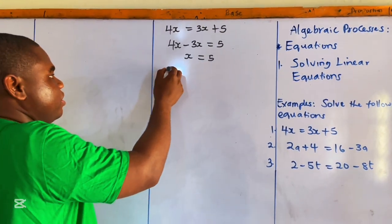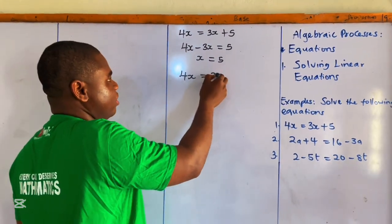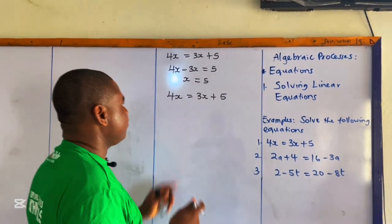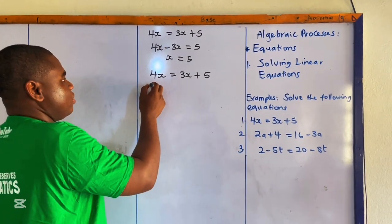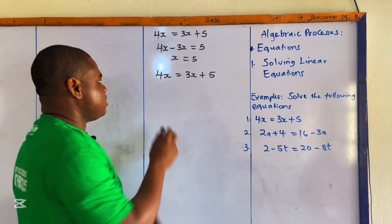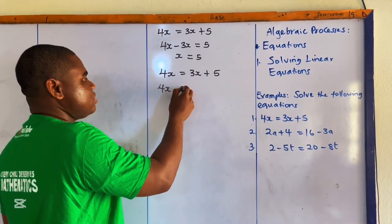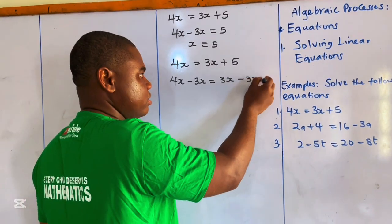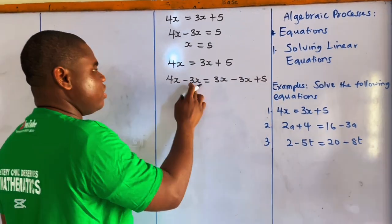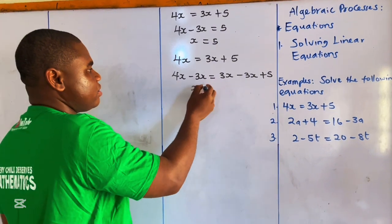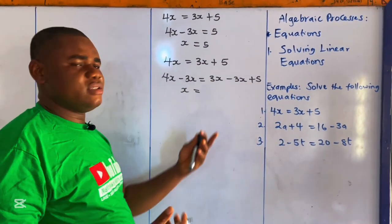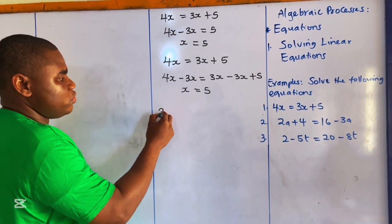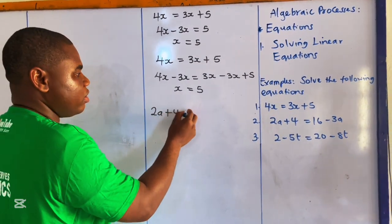If we had used the balance method, here is what would happen: 4x equals 3x plus 5. We subtract 3x from both sides, giving us 4x minus 3x equals 3x minus 3x plus 5. That gives us x equals 5, since 3x minus 3x is zero.